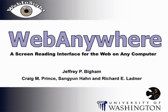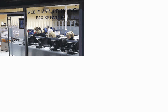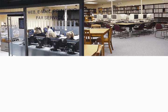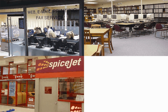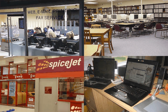Fulfilling the promise of a web-enabled global community means enabling blind web users to access their information and collaborative web services wherever they happen to be on whatever computer they happen to have access to. Whether blind web users simply want to check their email at an internet cafe, look up the next conference deadline from their university library, collaboratively edit a document from a public kiosk at the airport, or use a sighted friend's laptop without worrying about what operating system it's running, taking full advantage of the global web means connecting anywhere.